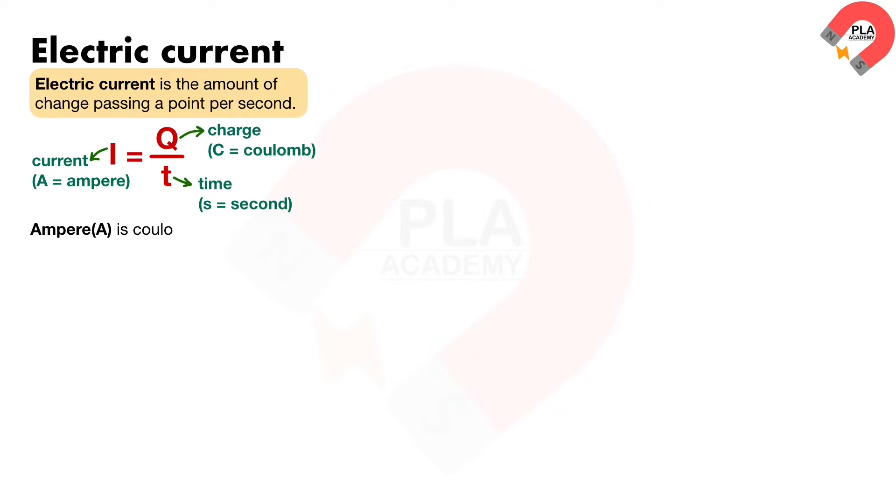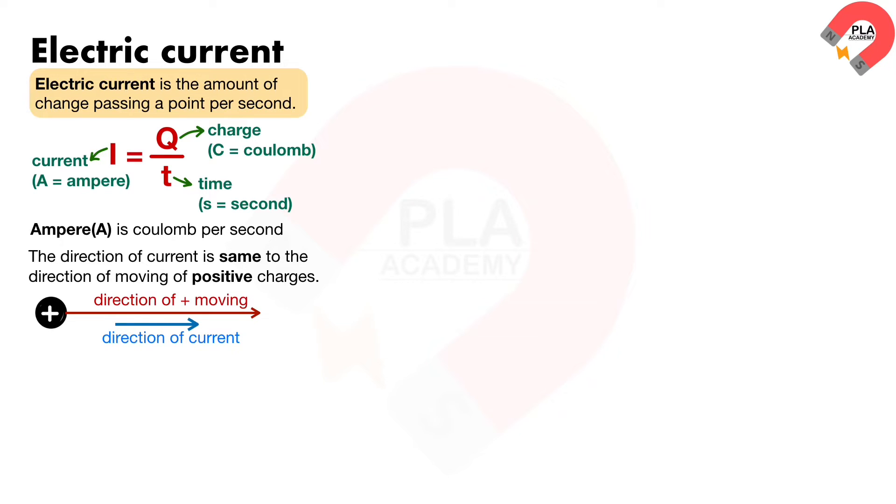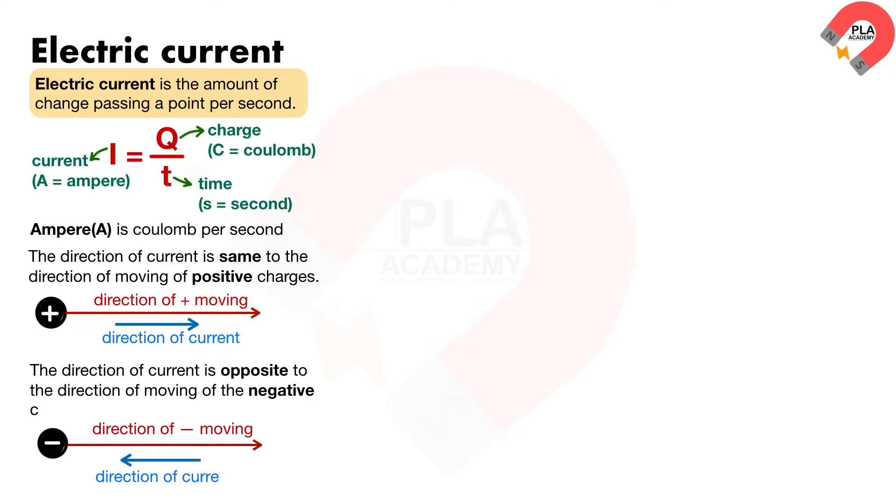Ampere is coulomb per second. The direction of current is same to the direction of moving of positive charges, while the direction of current is opposite to the direction of moving of the negative charges.